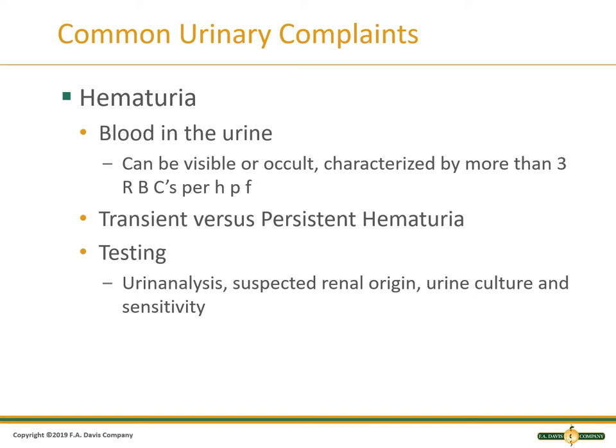Is it transient or persistent? Do they have urinary tract infection symptoms of urgency, frequency, and dysuria with some pink-tinged blood? Is it bright red blood? Are there clots? You need to know the description of the urine. Testing includes a urinalysis, culture and sensitivity. If you suspect a renal origin, urine cytology is important as well, especially as we age, to let us know if there are any malignant cells.